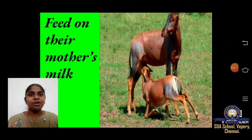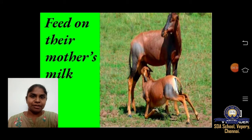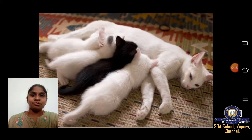The second thing is they feed on their mother's milk. Animals that feed on their mother's milk are called mammals — M-A-M-M-A-L-S. Many animals like giraffe, lion, zebra, cow, dog, and cat are mammals. Look at this cat — look at these kittens drinking milk from their mother.